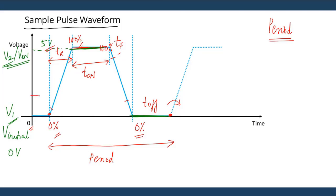The last parameter we need to understand is called TD or delay time. The delay time is the offset from the origin — it is the offset from zero time at which the waveform starts.